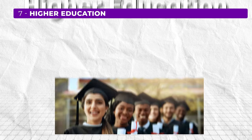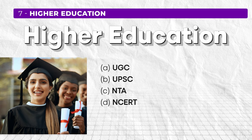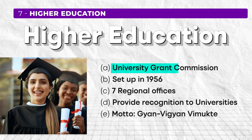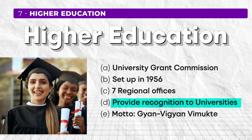To clear UGC Net, you also need to study higher education. The important things to know are about the main institutions working in the field of higher education — for example, UGC, UPSC, NTA, and NCERT. You must be aware of some basic points about all these bodies. For UGC, you should know the full form is University Grants Commission, it was set up in 1956, and it has seven regional offices with the head office in Delhi and others in Pune, Bangalore, Kolkata, and so on. The main purpose of UGC is to provide recognition to universities. The motto of UGC is 'Jan Vigyan Vimukti,' which means 'knowledge liberates' in English. Similarly, you must know the full form of UPSC, what NTA is and its role in conducting examinations, and basics about NCERT and CBSE.